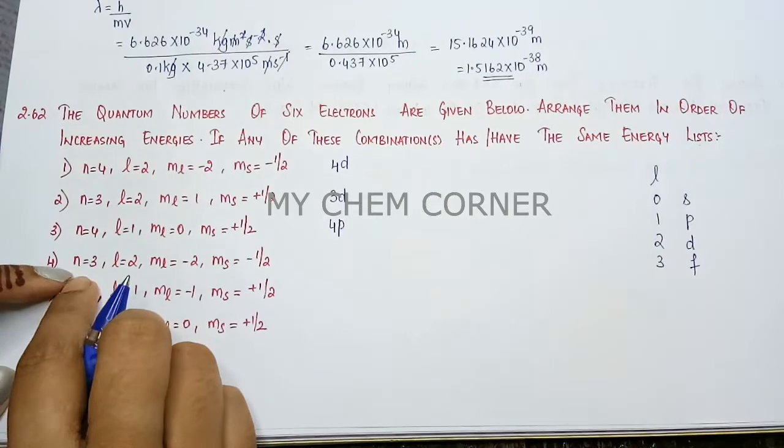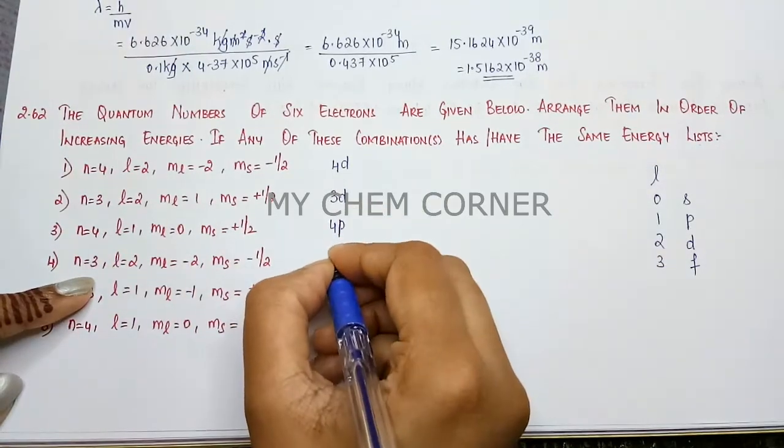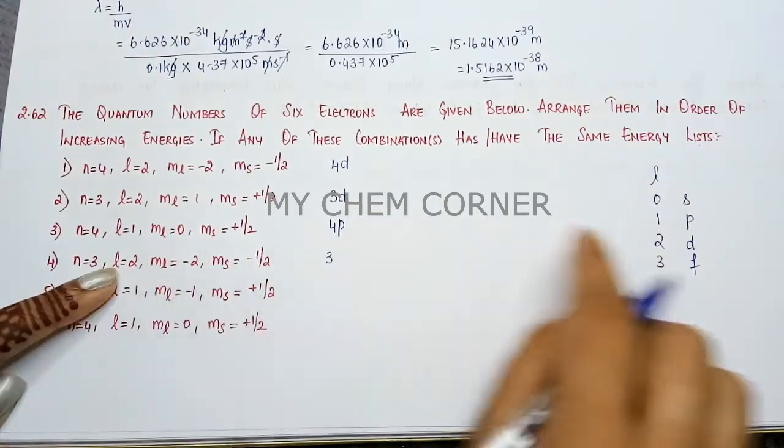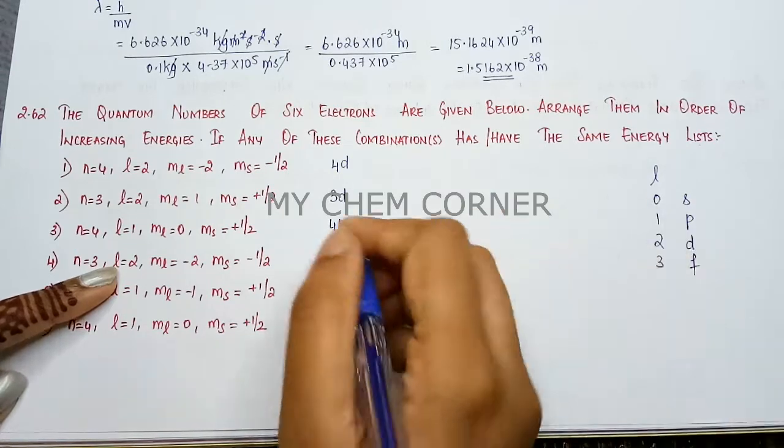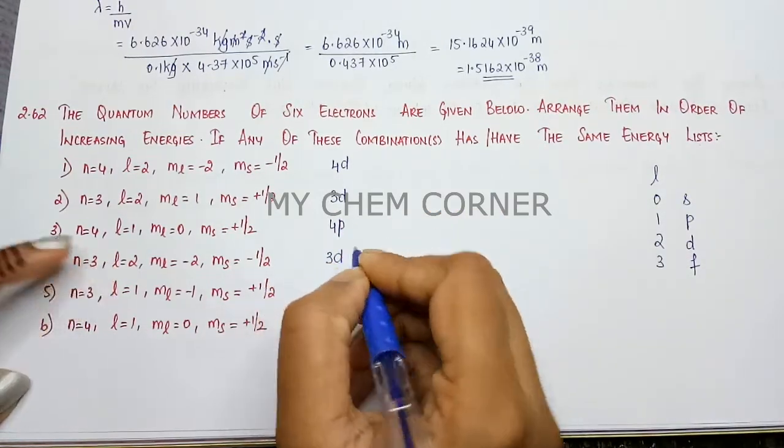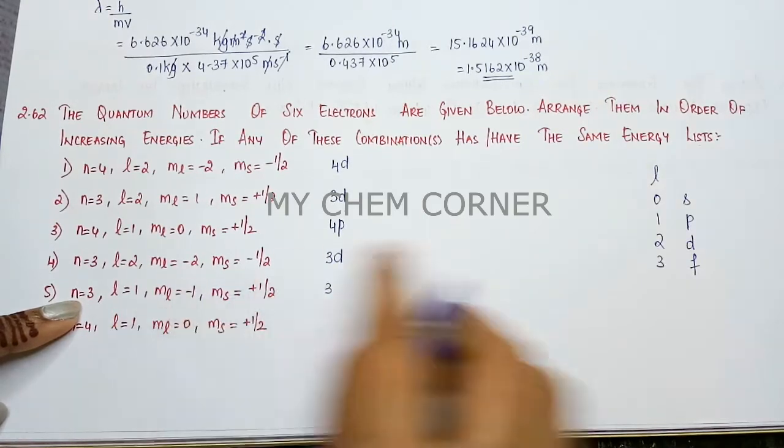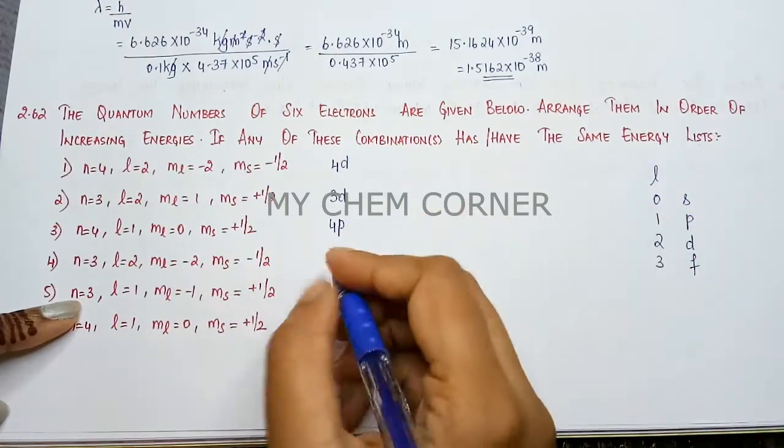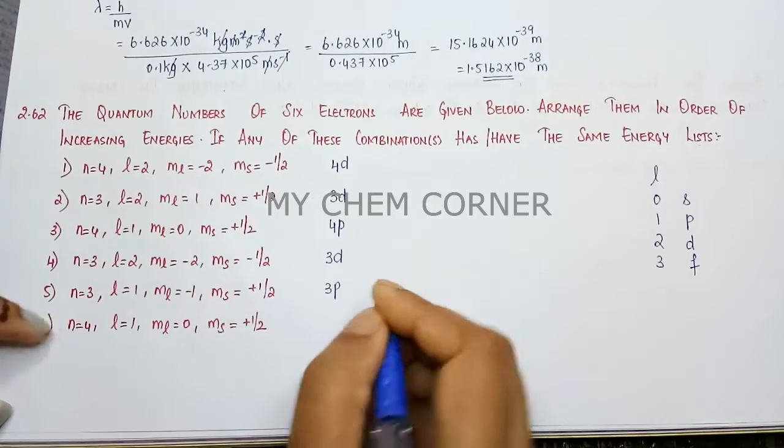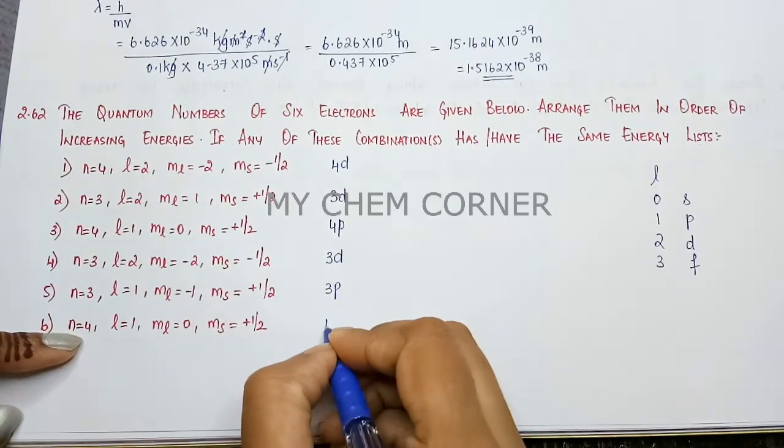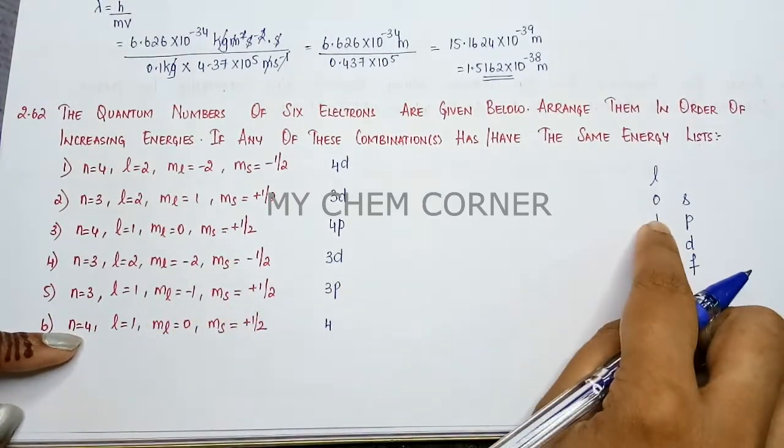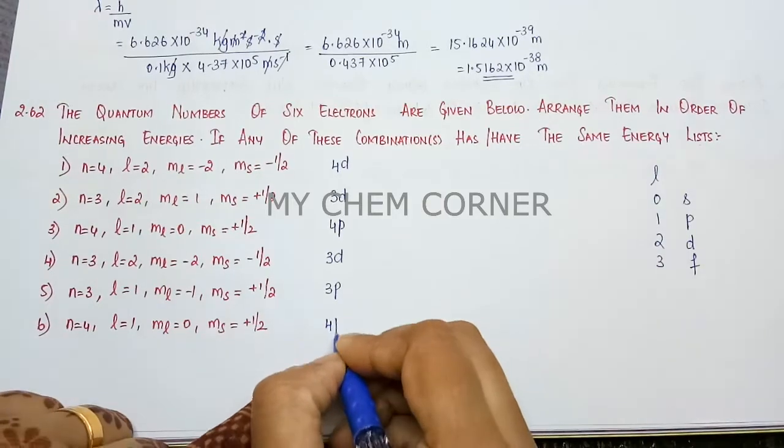Then we have n = 3, l = 1, so that is p orbital. Then n = 4 and l = 1, so we have 4p.